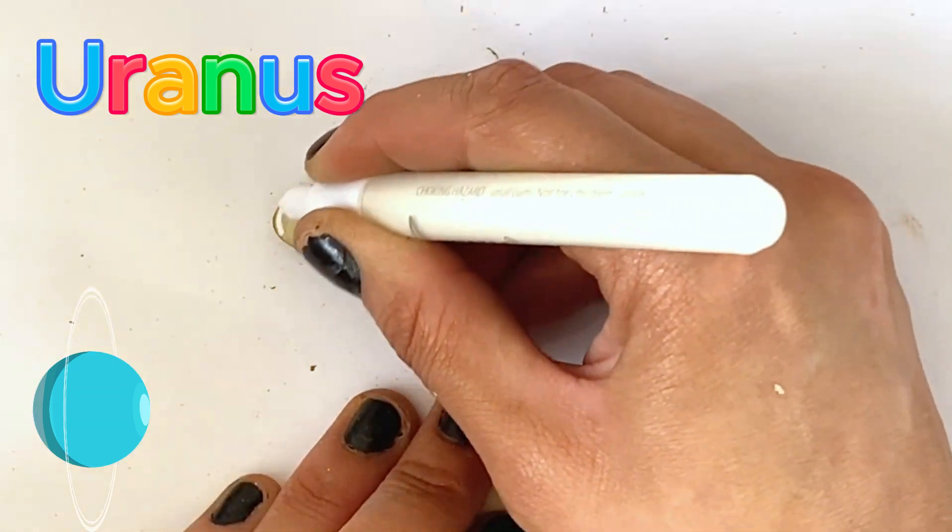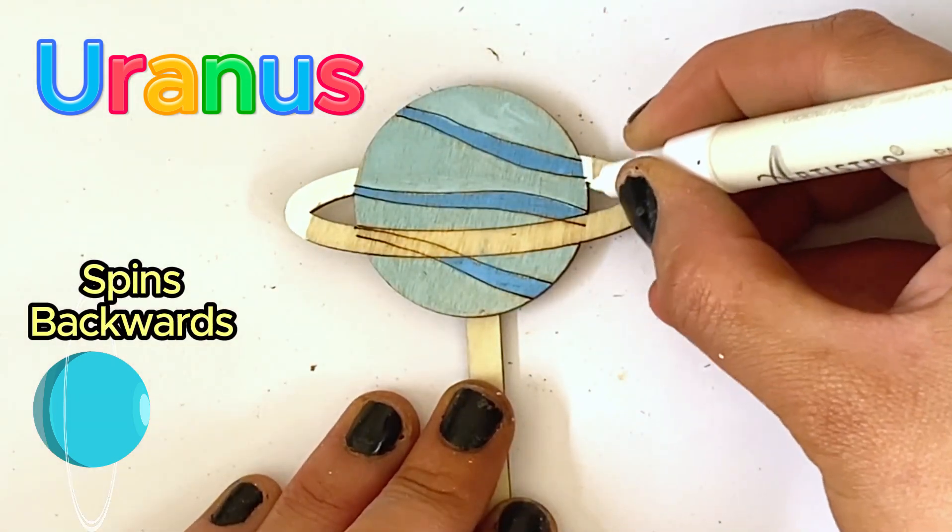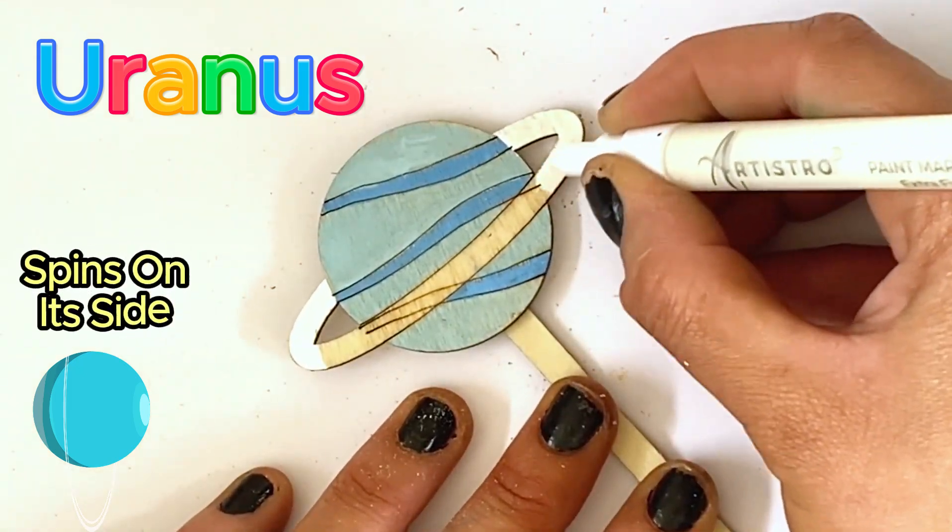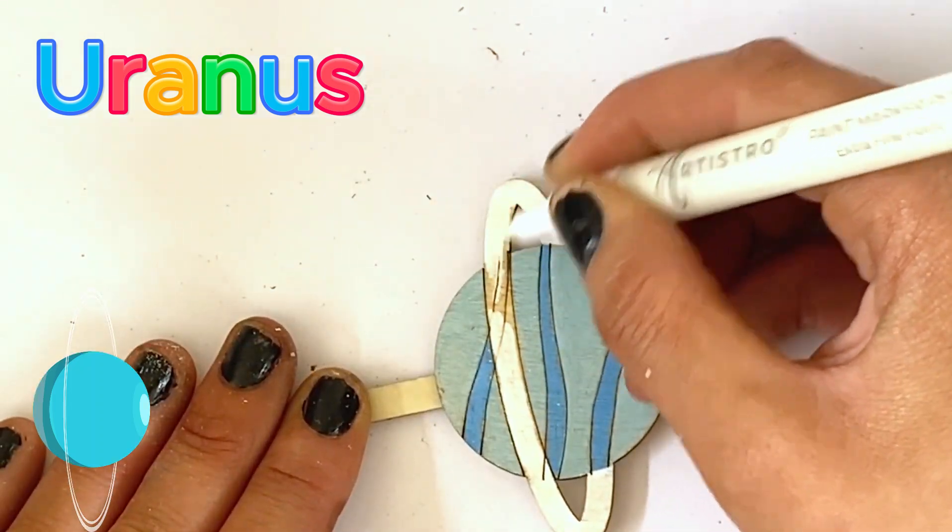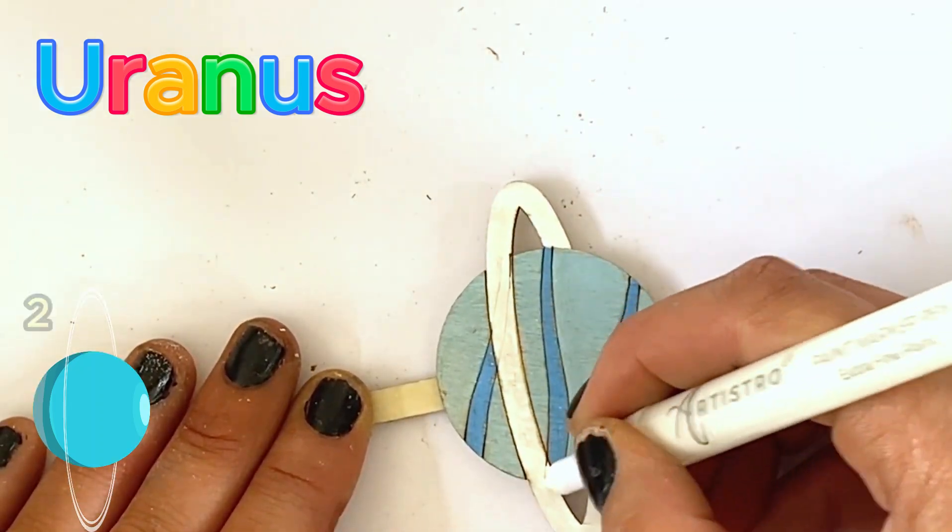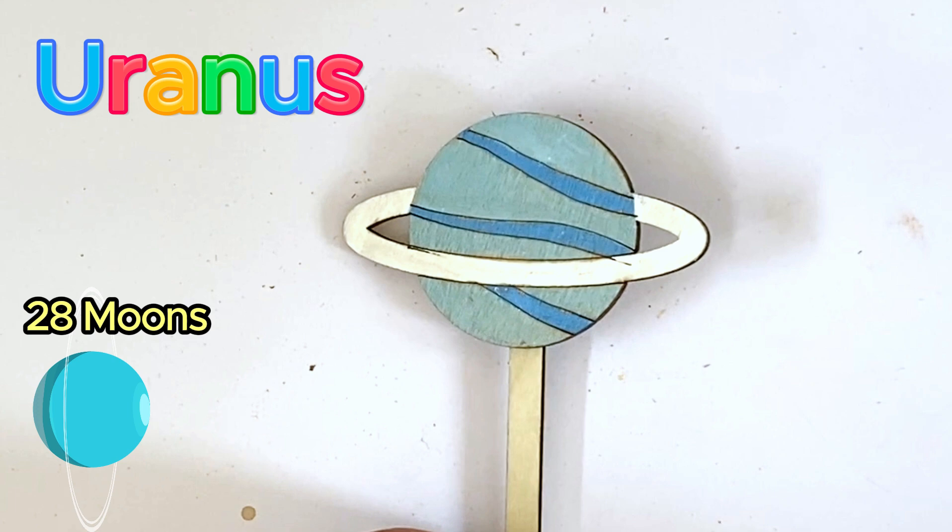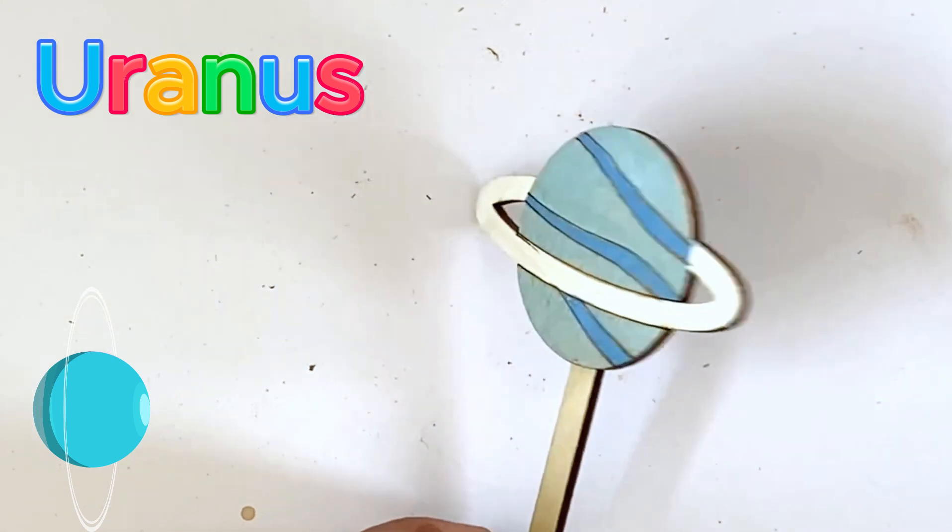Also, just like Venus, Uranus spins backwards. However, Uranus spins on its side as well. This is thought to be due to a previous collision millions of years ago. And Uranus also has 28 official moons. And here is our finished Uranus.